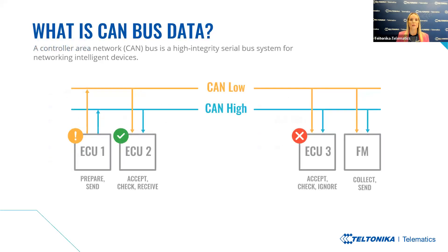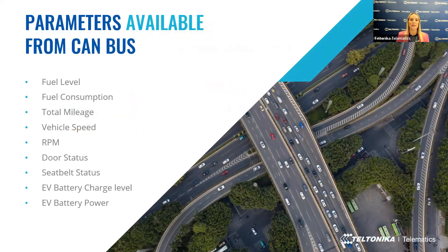What is CAN bus data? It is a high-integrity serial bus system for networking intelligent devices. In an automotive CAN bus system, ECUs can be the engine control unit, airbags, audio system and more. A modern vehicle may have up to 70 ECUs, each sharing information with other parts of the network. These ECUs send data to the CAN bus, which we can read using CAN bus data reading equipped devices.